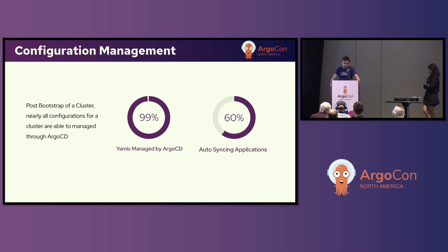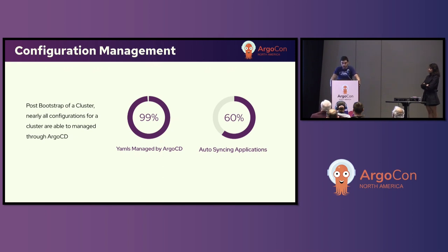Basically everything is managed through Argo CD, and at about this present time we're sitting at about 60% of our configurations auto-syncing from GitHub to the cluster. We're also looking at using the time window feature of Argo CD to timebox certain clusters to certain time windows, so we can get changes merged in GitHub sooner instead of being instantaneous. The last 40%, as we get more comfortable with how we process Argo PRs and how Argo does its syncing, we'll continue to increase. Some of the major ones we're still skipping are upgrades — we don't auto-sync from GitHub, just in case something were to downgrade.